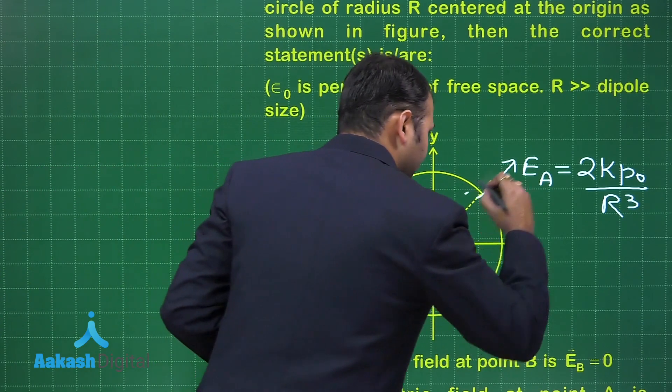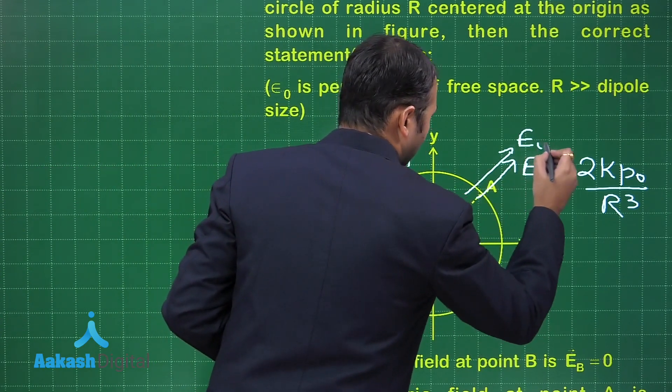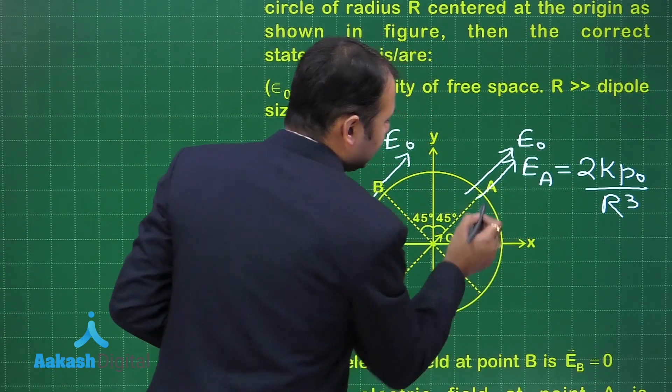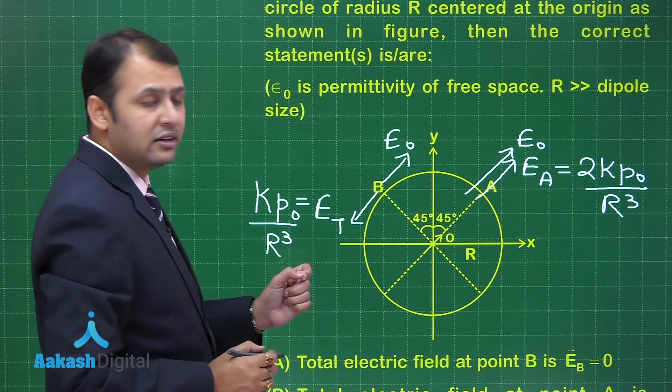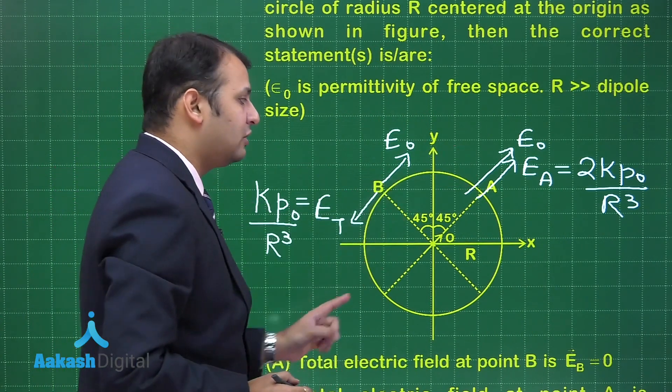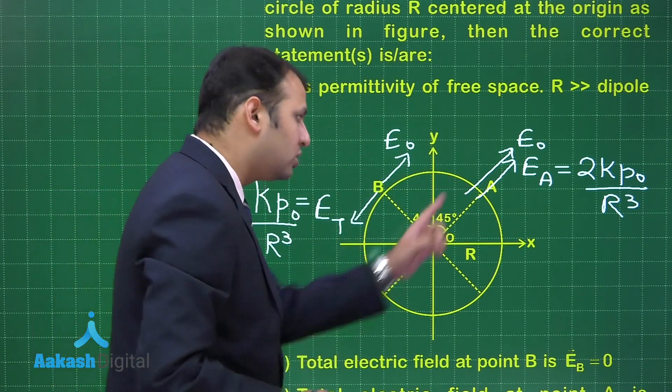And in here, if E₀ is in this direction, then also you don't have any tangential component at point A. That means E₀ is having the proper suitable direction along the dipole moment.